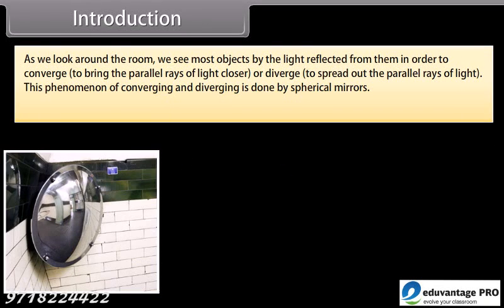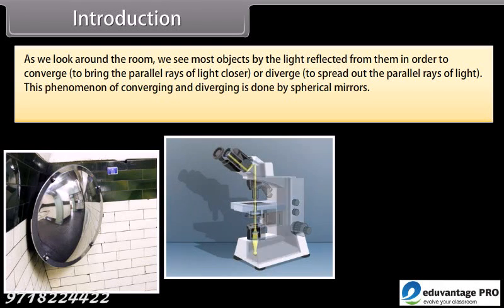As we look around the room, we see most objects by the light reflected from them. In order to converge and bring the parallel rays of light closer, or diverge to spread out the parallel rays of light, this phenomenon of converging and diverging is done by spherical mirrors.